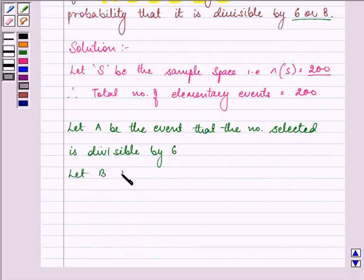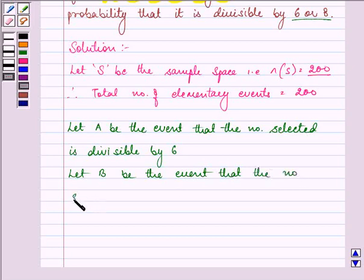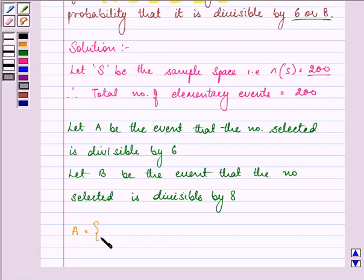Let B be the event that the number selected is divisible by 8. So, we have the elements in A as 6, 12, 18 and so on, and the last one is 198. That means the number of elements in this event are 198 divided by 6, that is 33.